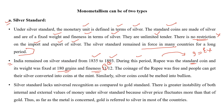जो coinage था rupees का — चांदी के सिक्के लोगों के लिए free थे। लोग mint के पास जाकर अपने bars या jewelry देकर उन्हें coins में easily convert करवा सकते थे। And the same thing could be done in reverse — अगर आपके पास चांदी के सिक्के हैं, तो आप उसे melt करके bars या bullion में convert करवा सकते थे।